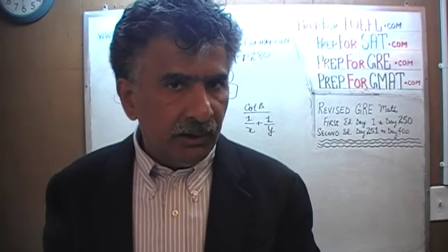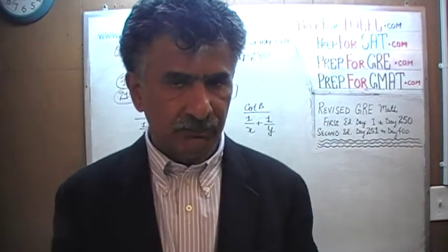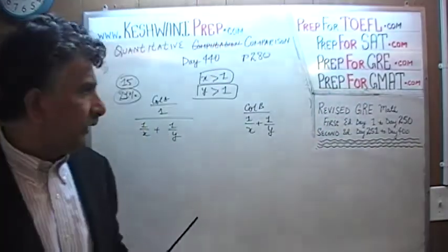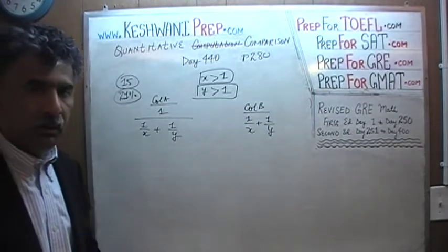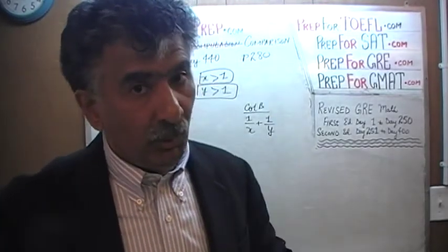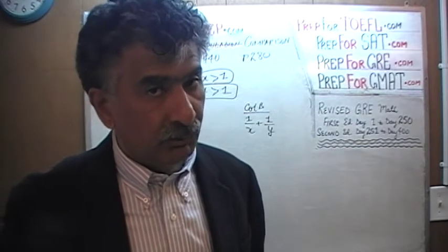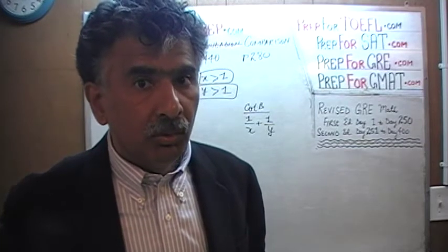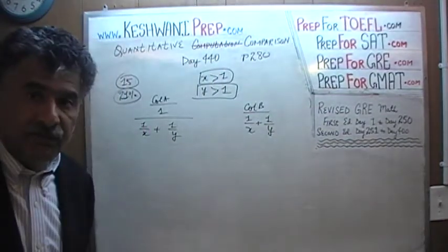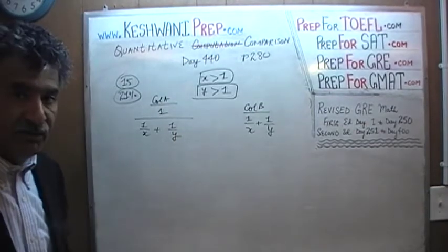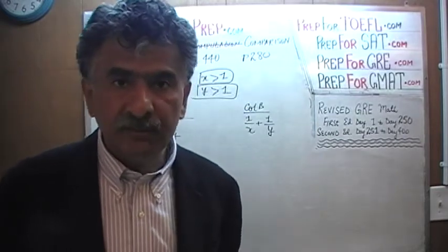When you are plugging in numbers, it is always a good idea to think outside the box. You have to think of all the possibilities, including weird scenarios. Here we are told that x has to be more than one and y has to be more than one. The simplest scenario: why not make them both two? There is absolutely nothing in this problem that says x and y cannot be equal, or that x is more than y or y is more than x. Why not make them equal? Make them both two. Keep it simple.